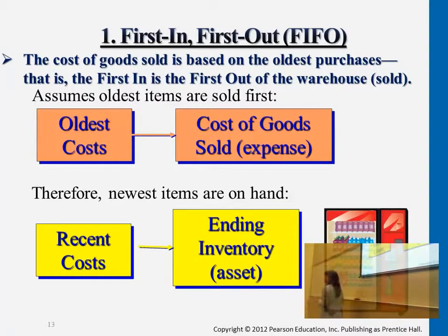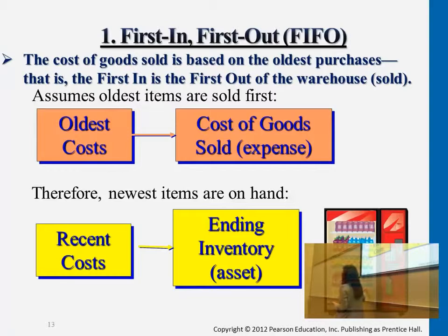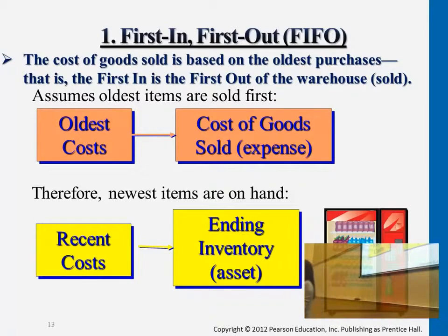Keep in mind that these inventory methods only apply whenever we start selling the products. If we're just purchasing inventory and accumulating the inventory account, we're not using any of these inventory costing methods. We start to use these methods when we start selling to customers — that's where the sales transactions in Chapter 5 come in.